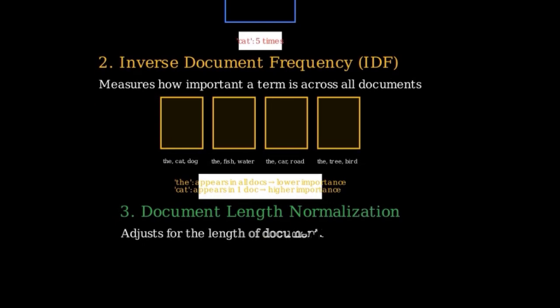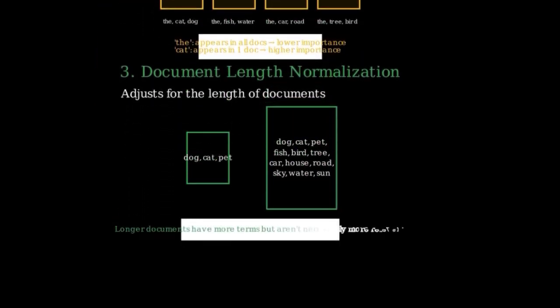And finally, there's Document Length Normalization. This adjusts for the length of the document. Longer documents have a higher chance of containing more terms, so this normalization helps to balance the relevance score.